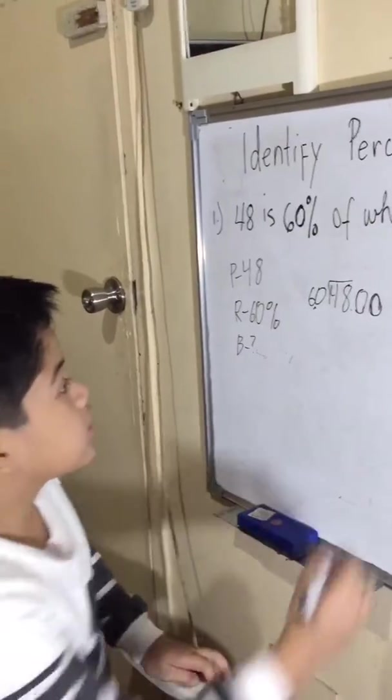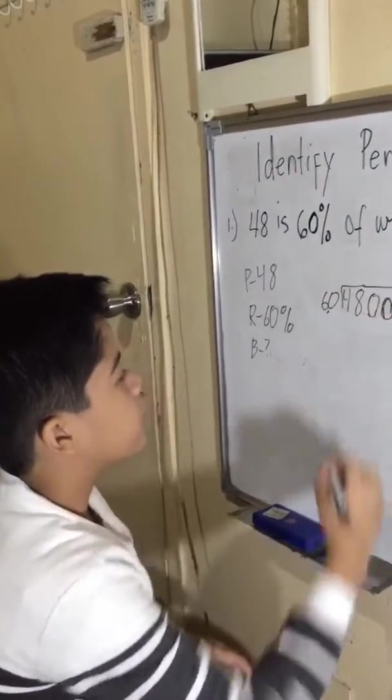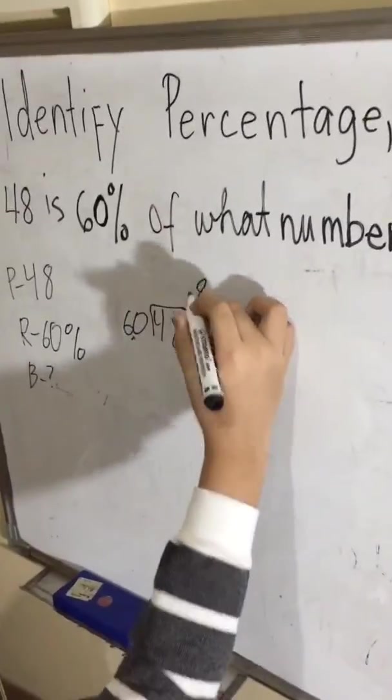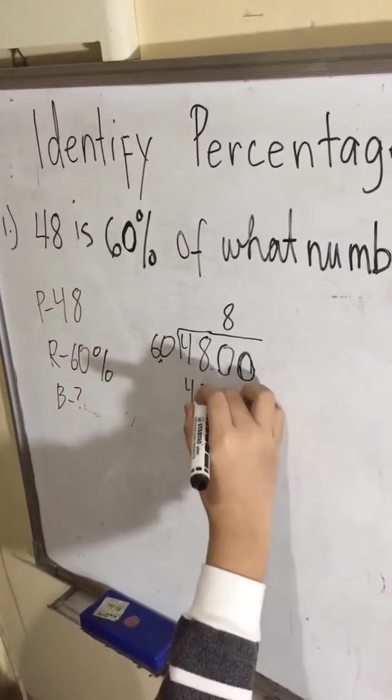So, 60, so 480 would be good. So that would be 8. So 8 times 60 would be 480.